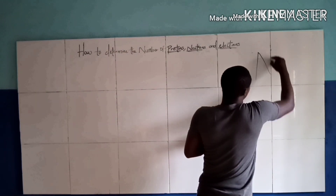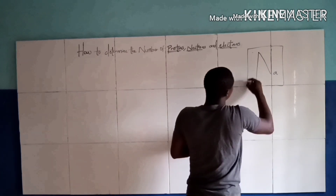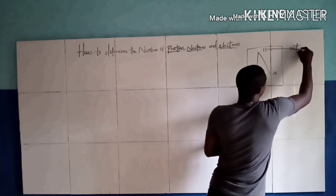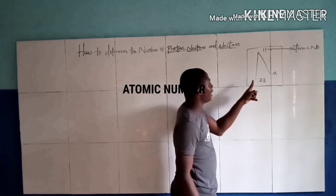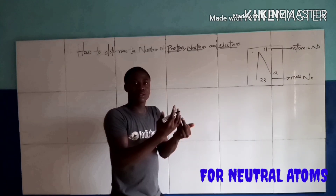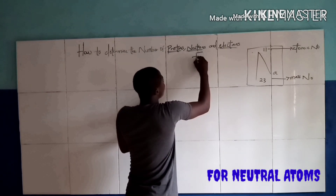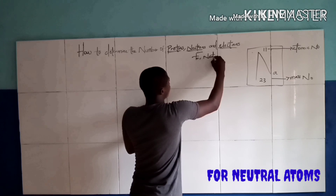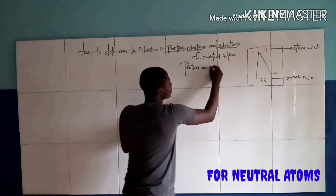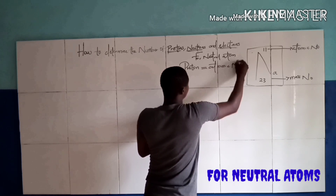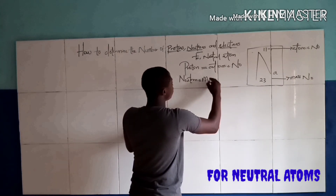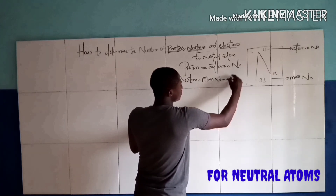For example, this is the sodium atom, and this is the way it is arranged in the periodic table. If you are asked, the lesser number is called the atomic number and the larger number is called the mass number. For a neutral atom, the proton number is the same as the atomic number, and the neutron number is gotten from the mass number minus the atomic number.